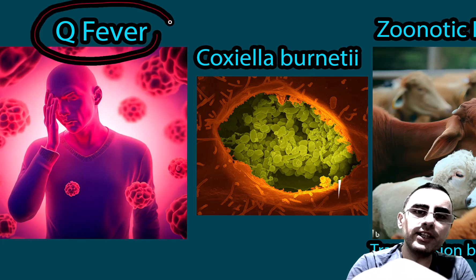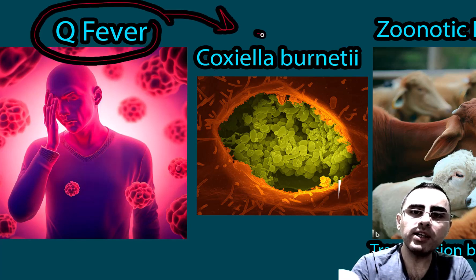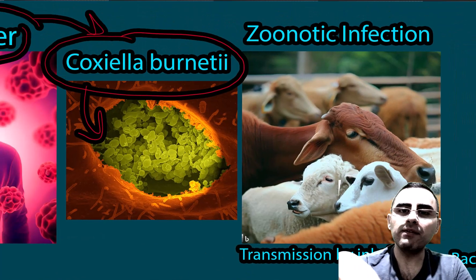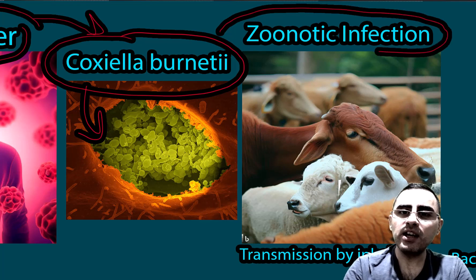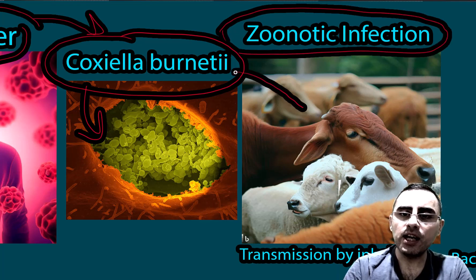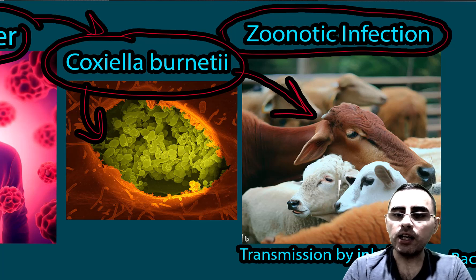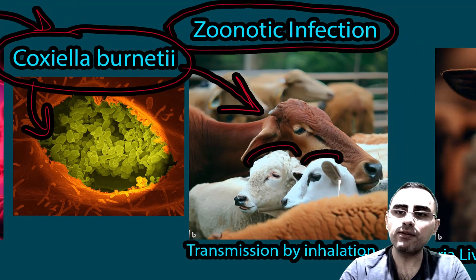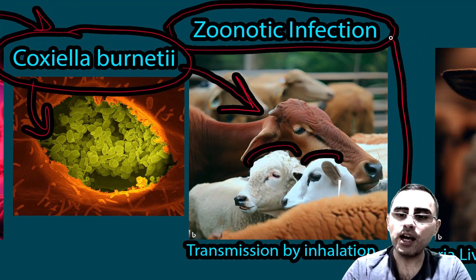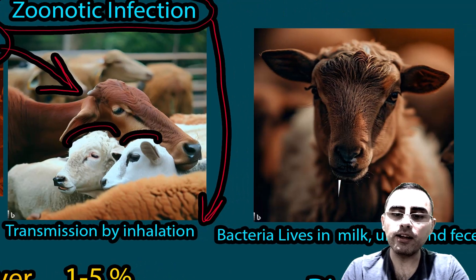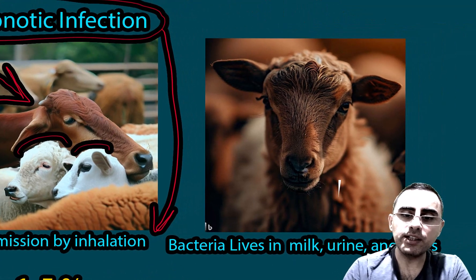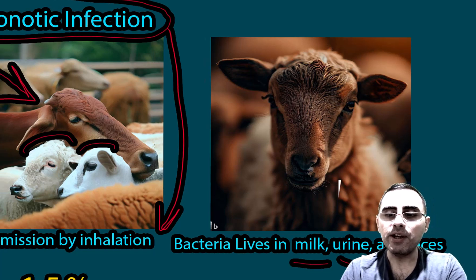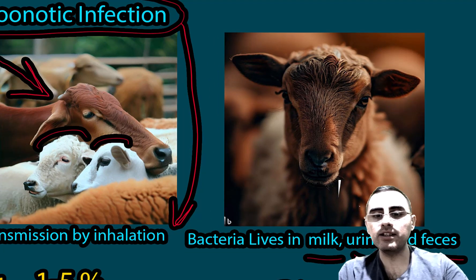Q-fever is a bacterial infection caused by Coxiella burnetii, and it is a zoonotic infection. Zoonotic means that this bacteria primarily affects cattle, usually goats and sheep, and it is transmitted from cattle to humans. Transmission happens by inhalation. The bacteria usually live in milk, urine, and feces of these cattle, and when they dry out, they can be inhaled as dust.